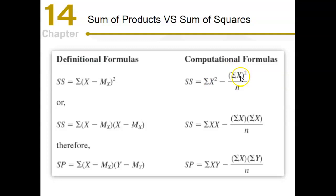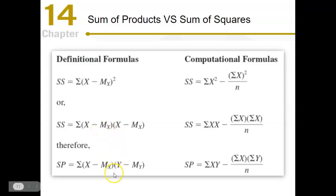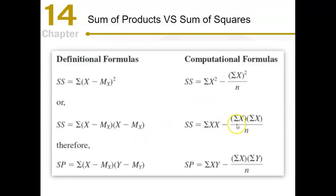If we expand the squared term, it would look like the sum of products definitional formula — we're basically doing the same thing, just replacing the second X term with a Y term. Expanding the computational version similarly gives something that looks like the sum of products computational formula, just swapping one X with Y and one X quantity with the Y quantity.